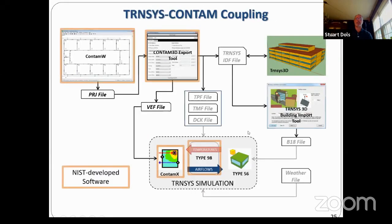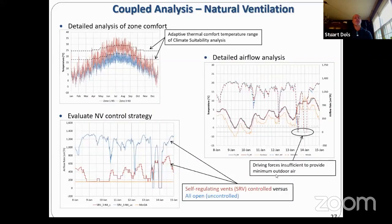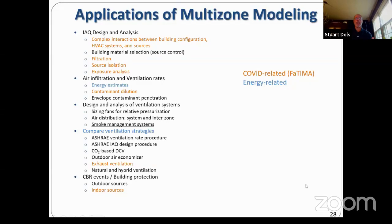The same has been done with TRNSYS, a very similar process. Now we can look at coupled analysis — for instance, demand control ventilation — and compare performance of the system under a leaky building envelope versus a tight building envelope, since leakage can confound system performance. We can evaluate energy saving measures and their effect on indoor air quality, and look at how energy saving measures affect non-controlled contaminants. We can do natural ventilation analysis, look at different control strategies with self-regulating or uncontrolled vents, and identify where driving forces are insufficient to provide outdoor air — perhaps requiring a hybrid system.